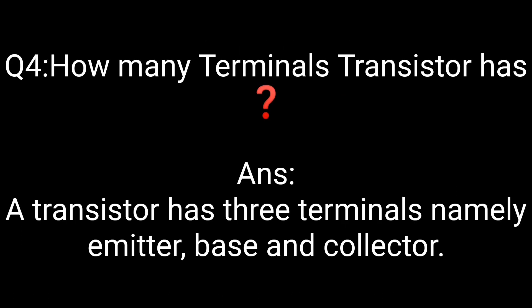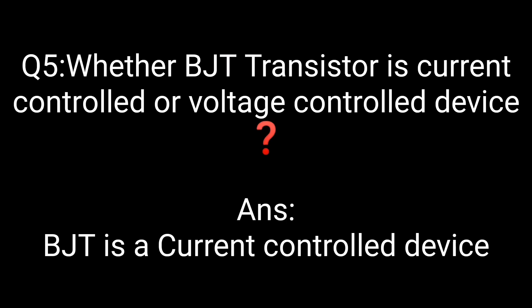Fourth: how many terminals does a transistor have? A transistor has three terminals, namely emitter, base, and collector. Fifth: whether BJT transistor is current controlled or voltage controlled device? BJT is a current controlled device.